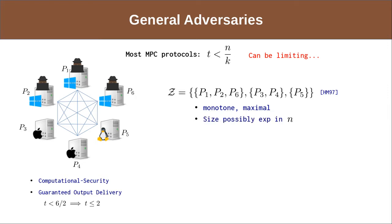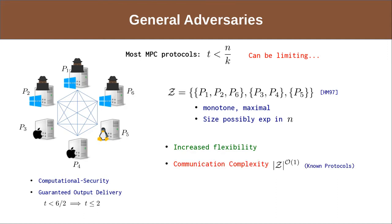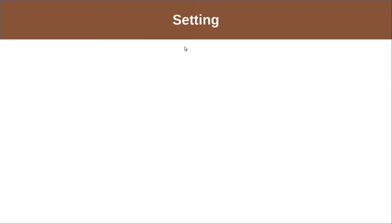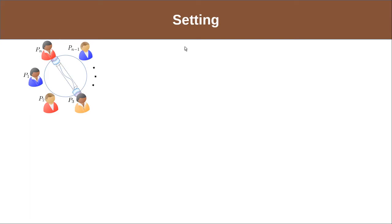The adversary structure has size possibly exponential in N due to the total number of possible subsets. Such a specification offers increased flexibility; however, it comes with the downside that known protocols have communication complexities of a constant power of the size of the adversary structure, and computational complexity bounded below by the size of the adversary structure. We consider the setting of N parties where each pair of parties is connected by a private and authentic channel.